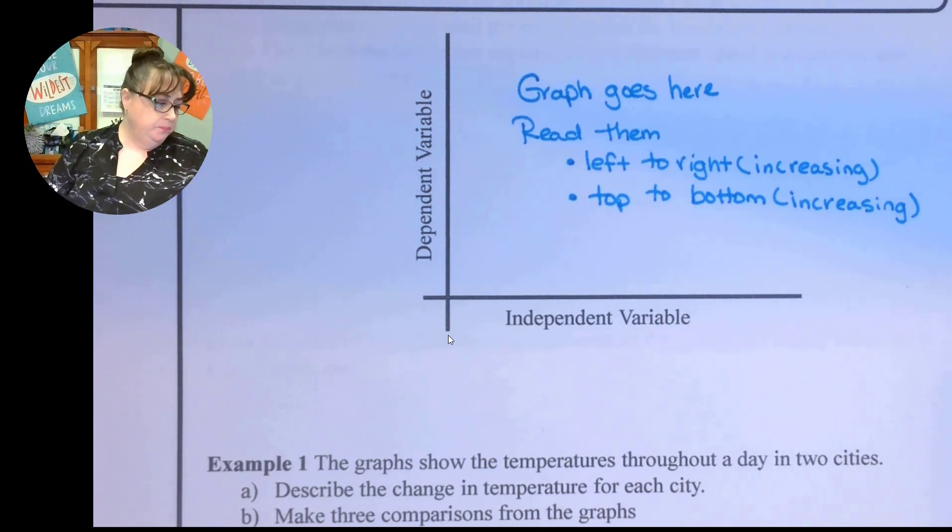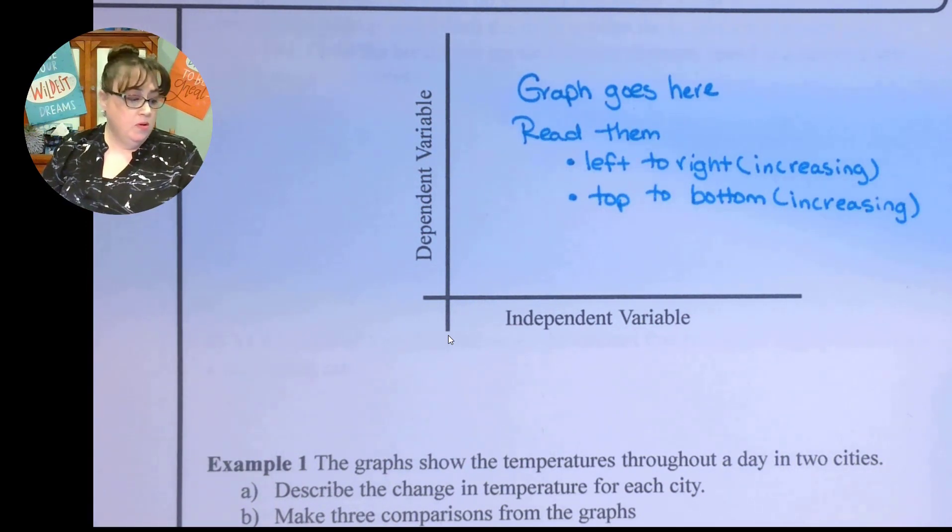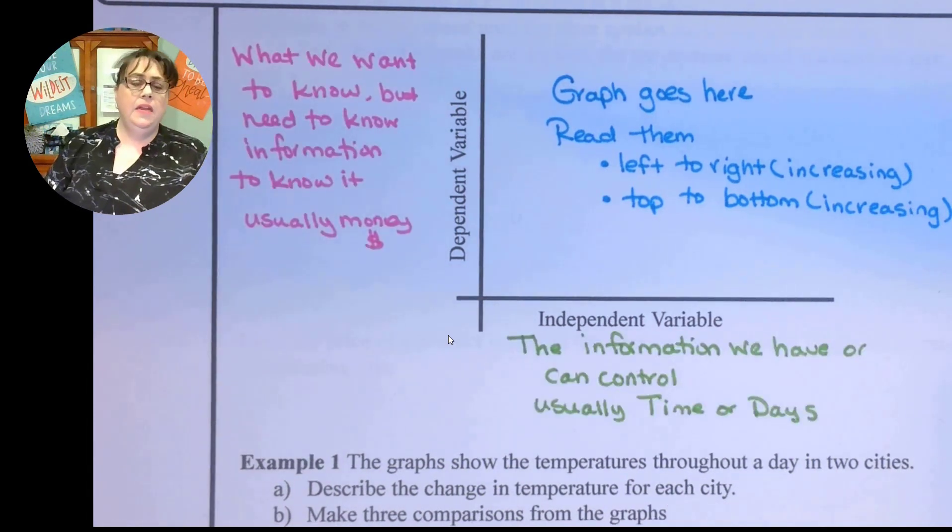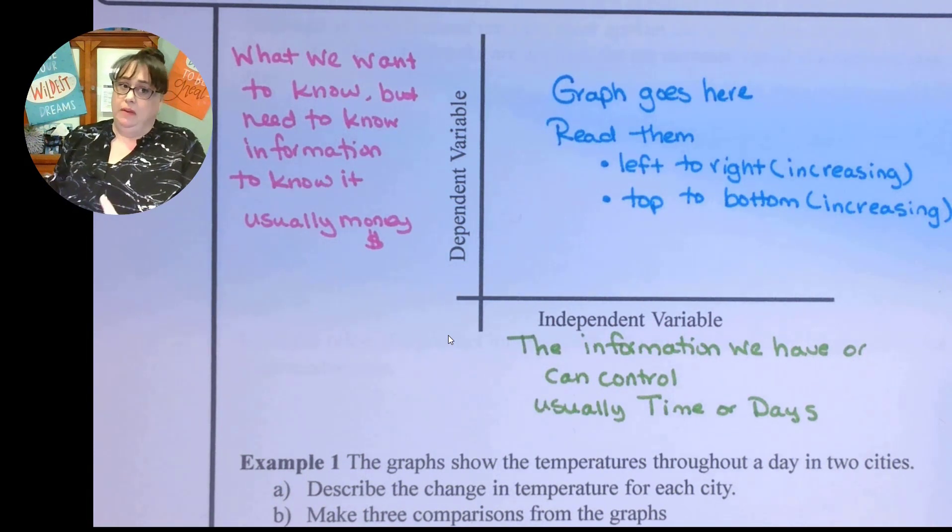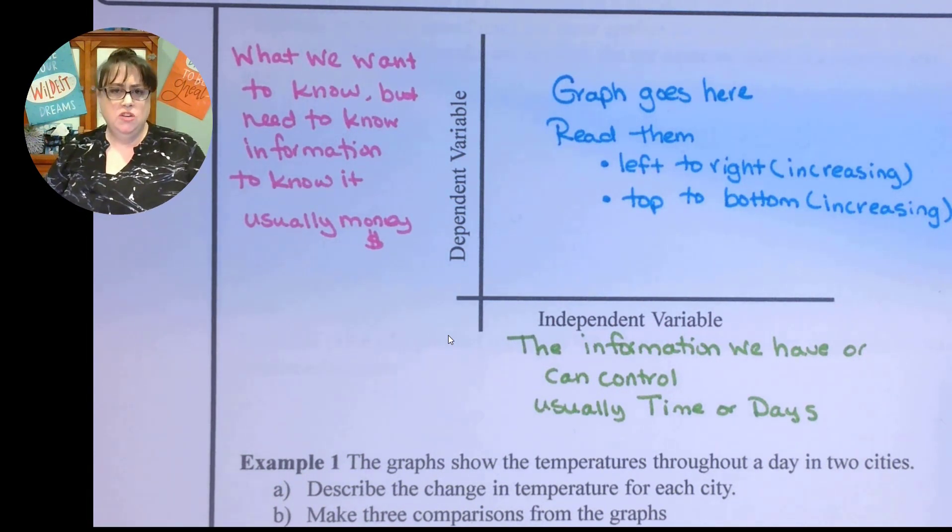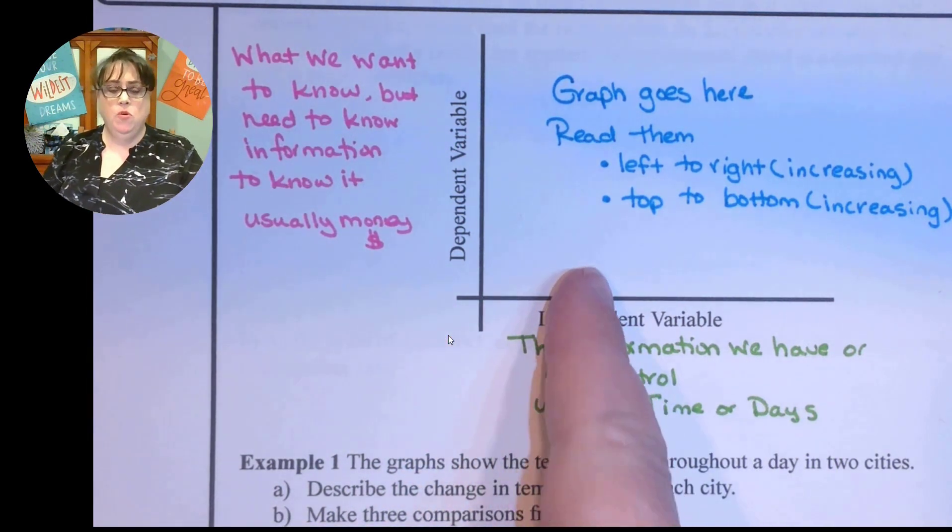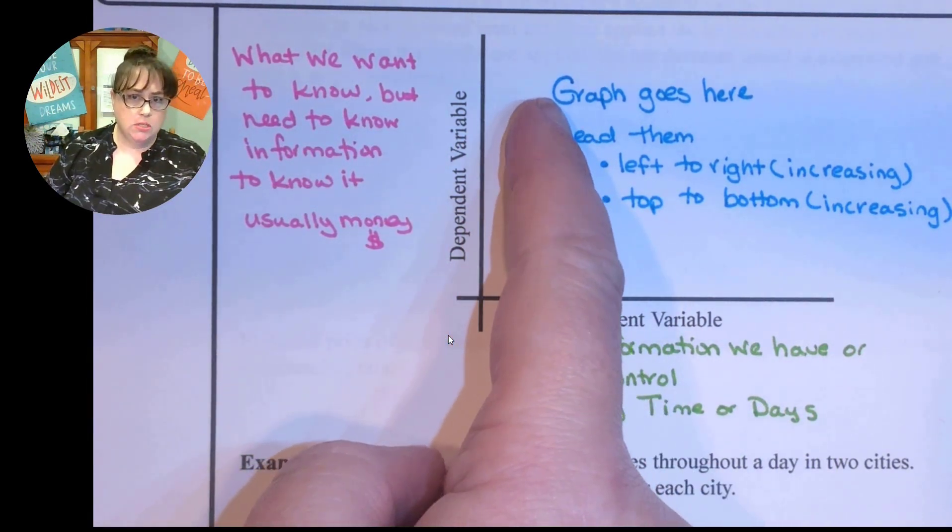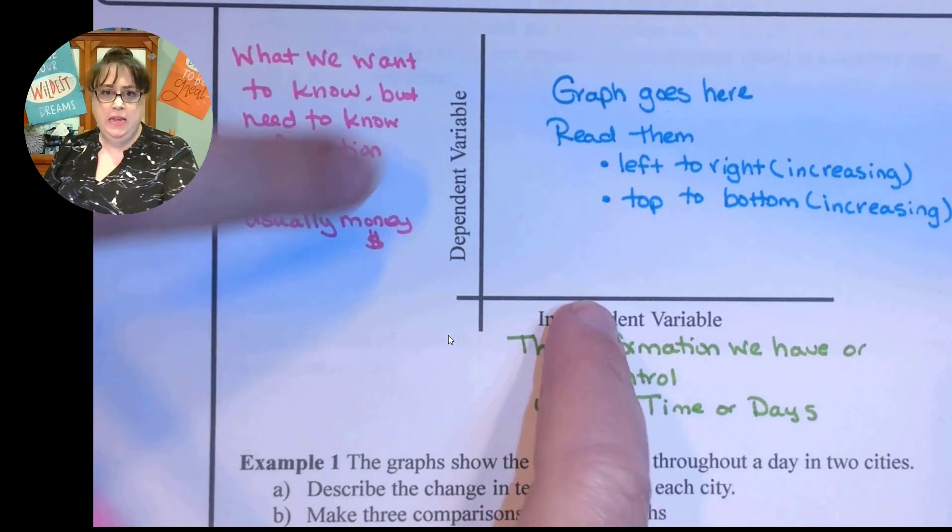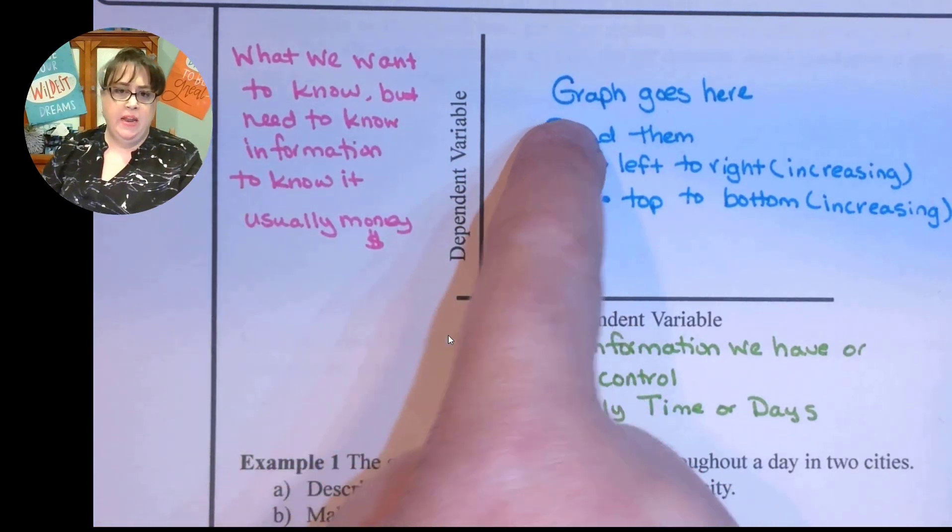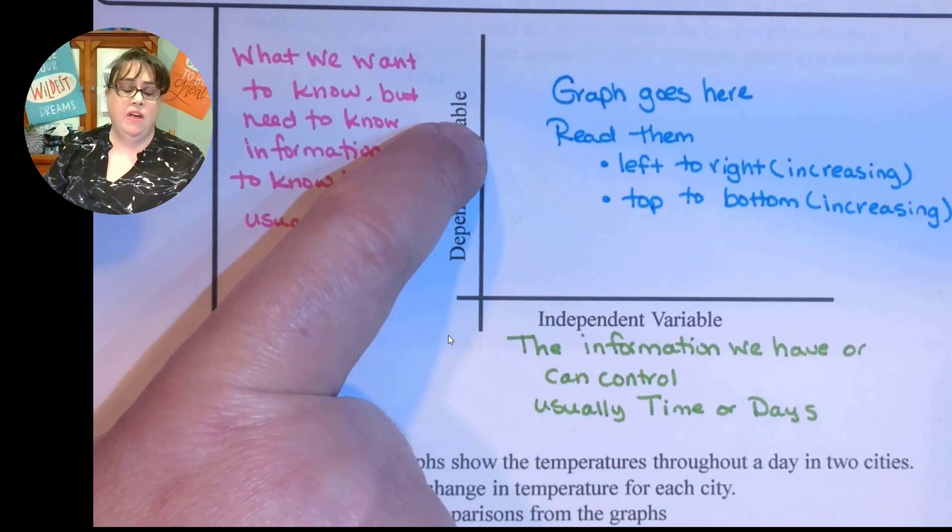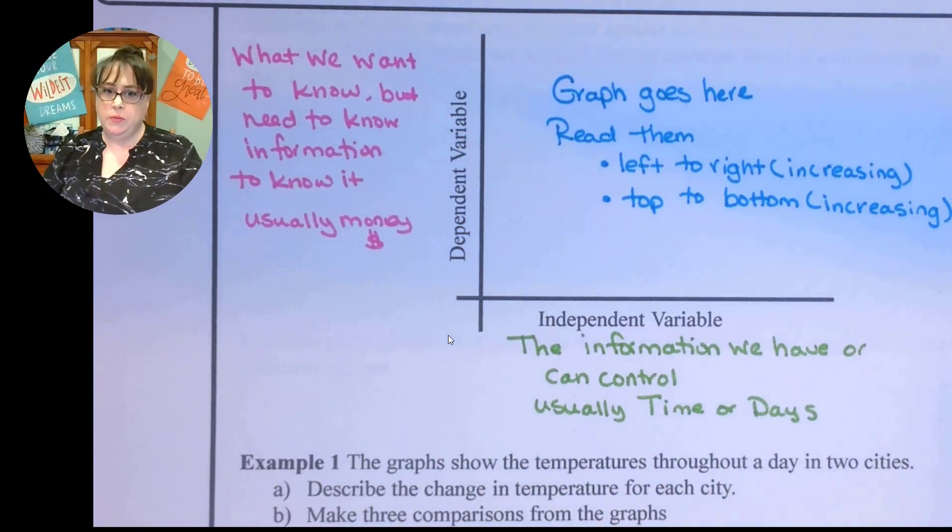The independent variable, this is the information that we have, the things we control, usually times and days. The dependent variable is usually what we want to know, but need to know information in order to know it, and it's usually money. So for example, if I told you that if I work for three days, I'm going to earn $500. So three days and then I go up and then I read across and I said, oh, I earned $500. So that's how graphs usually work.